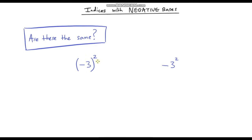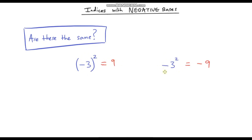So this one here, negative 3 in brackets squared, is positive 9. And this here, negative 3 squared without brackets, is negative 9. You may be wondering why they are different — surely they mean exactly the same thing. But no they do not. You can check this with a calculator: put the first into a calculator and you'd get 9; put the second in and you will get negative 9.